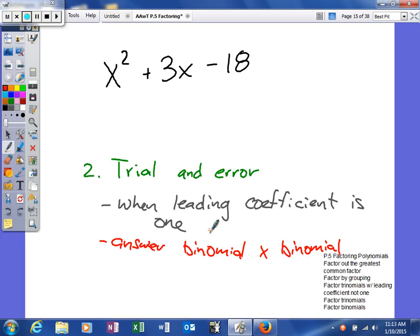What we're going to get is our answer as a binomial times a binomial, because we just factored this a second ago. If the leading coefficient is 1, it makes the problem just a little bit easier.